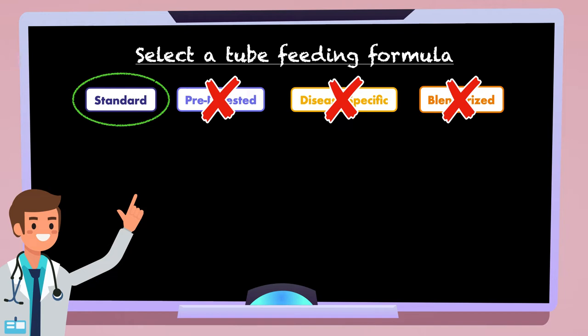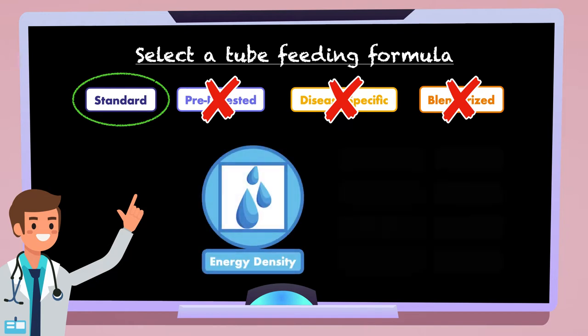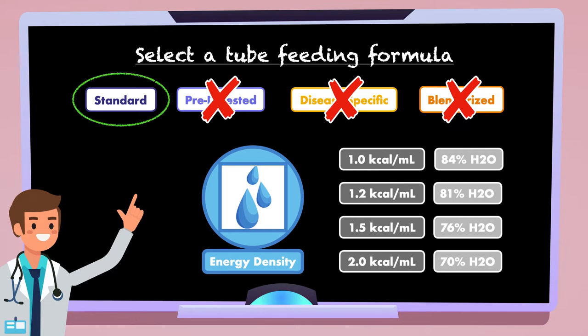Within standard formulas, there are differences in energy density ranging from 1 calorie per milliliter to 2 calories per milliliter. For Mr. Jones, any energy density could technically work. I would personally eliminate the 1.5 calorie and 2 calorie choices because they would require us to give a high amount of free water. Then, between the 1 calorie and 1.2 calorie formulas, I'd be more inclined to go with the 1.2 for a patient of this size just because I know from experience that it will result in a reasonable feeding rate and a reasonable amount of free water. The 1.2 calorie formula we have is 81% water and provides 55 grams of protein per liter.